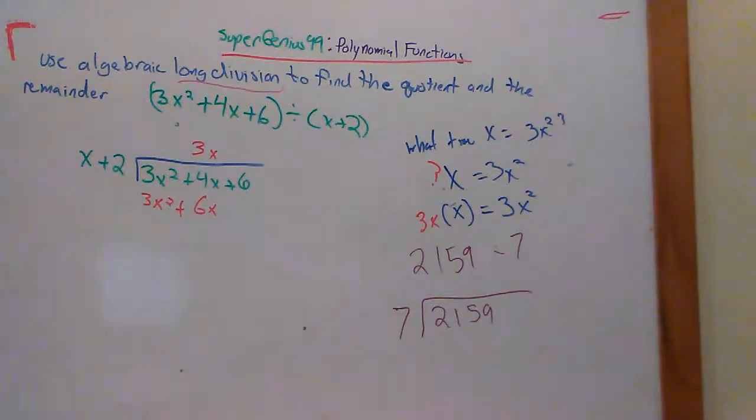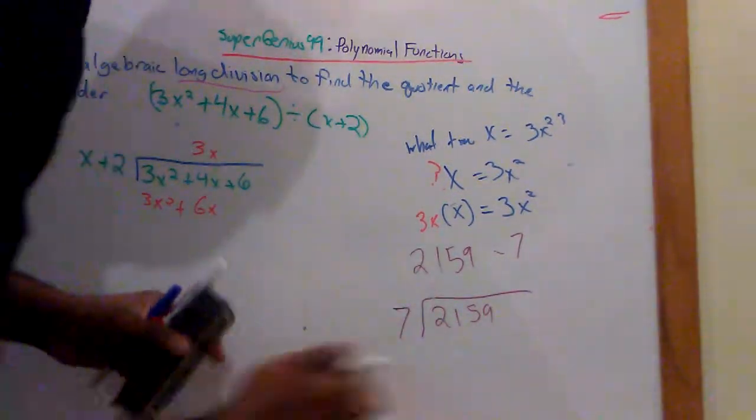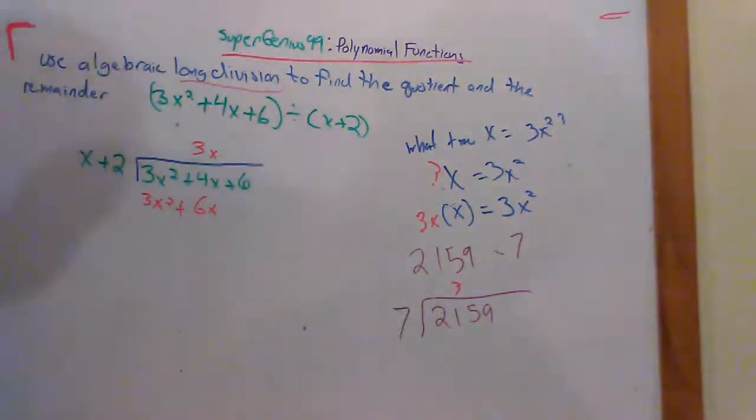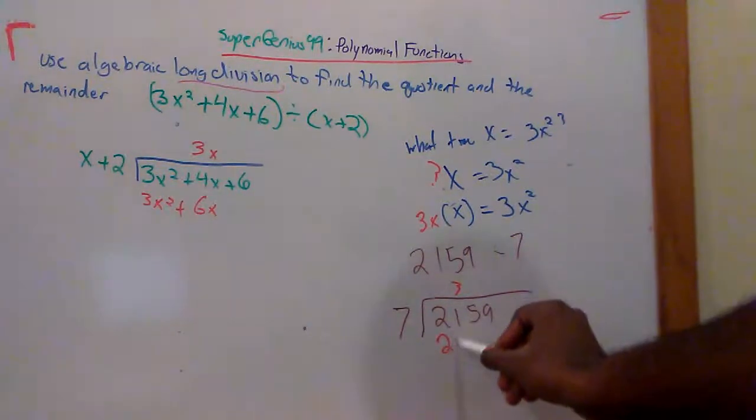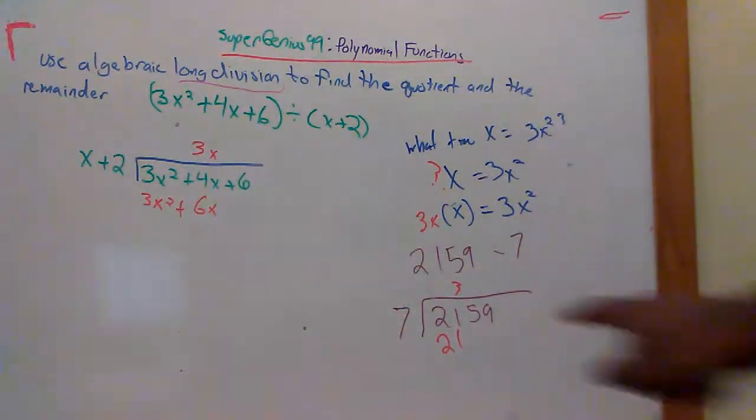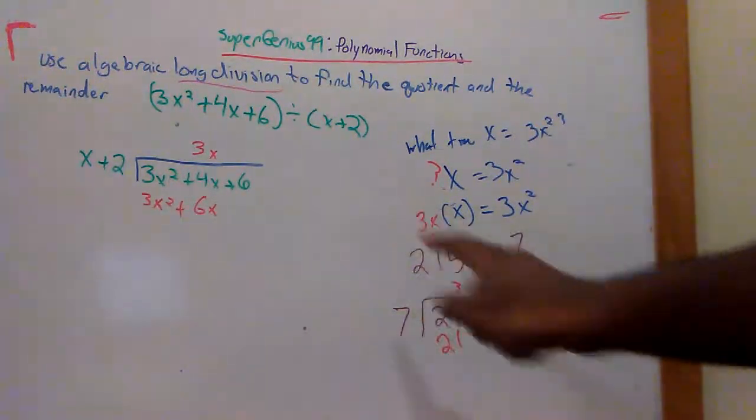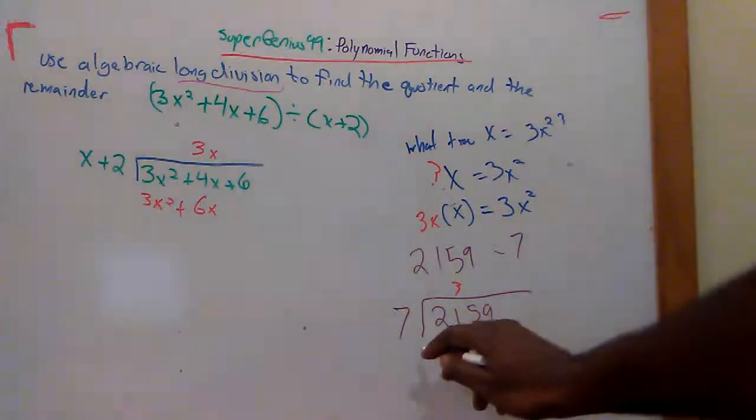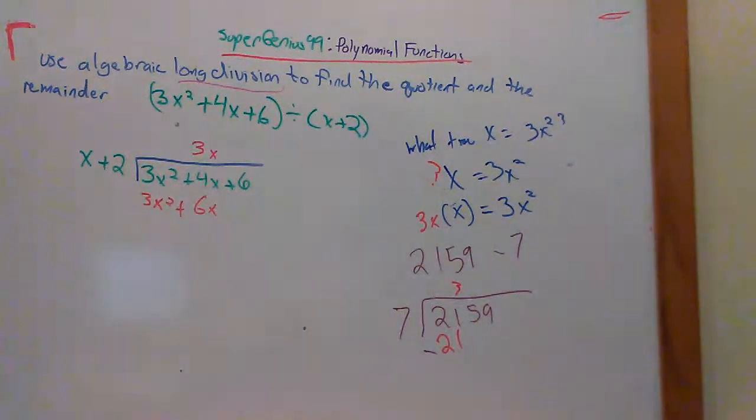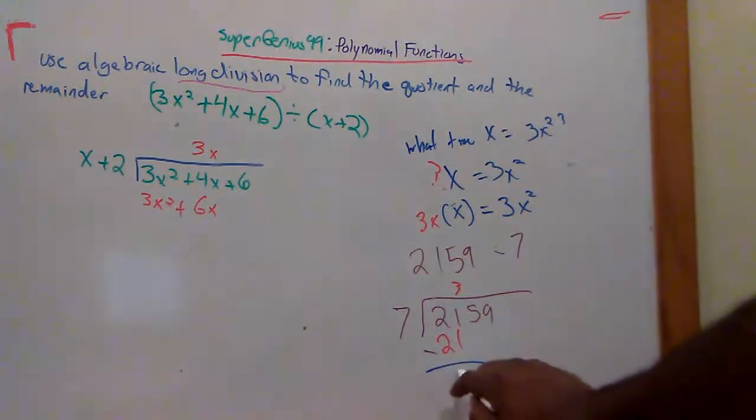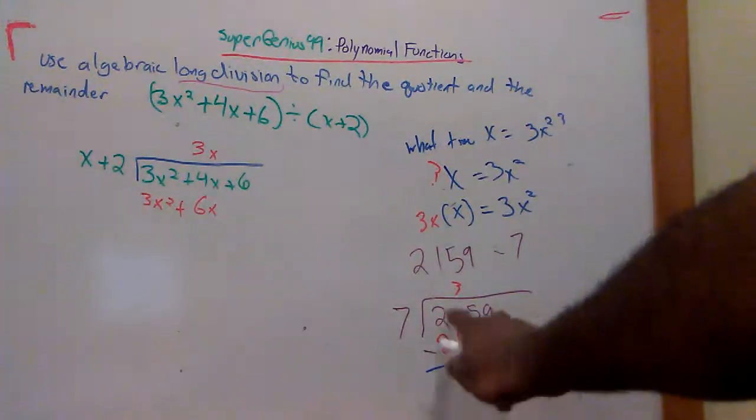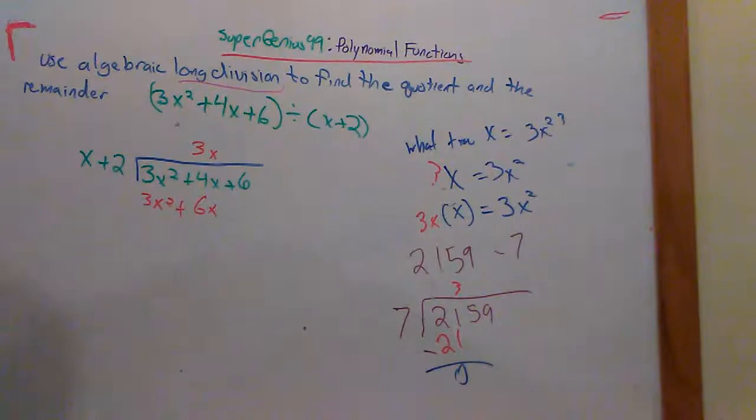And then you'd say how many times does 7 go into 21. Now, pay close attention here. When you said how many times did 7 go into 21, notice you didn't put the 3 over the 2, did you? No, you did not. You put the 3 over this guy right here. And then you said 7 times 3 is 21. And then you kept doing it. So that's what we're doing. And notice at this step, what did you do here? Did you add this 21 plus 21? You did not. You subtracted. Isn't that how you do regular division? You subtract it. You didn't add. You subtract. And you said, 21 minus 21 is 0.